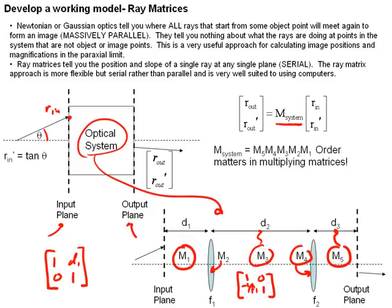And in order to do this, and this is one of the few things that's tricky about this approach, the system matrix is the matrices multiplied in reverse order.